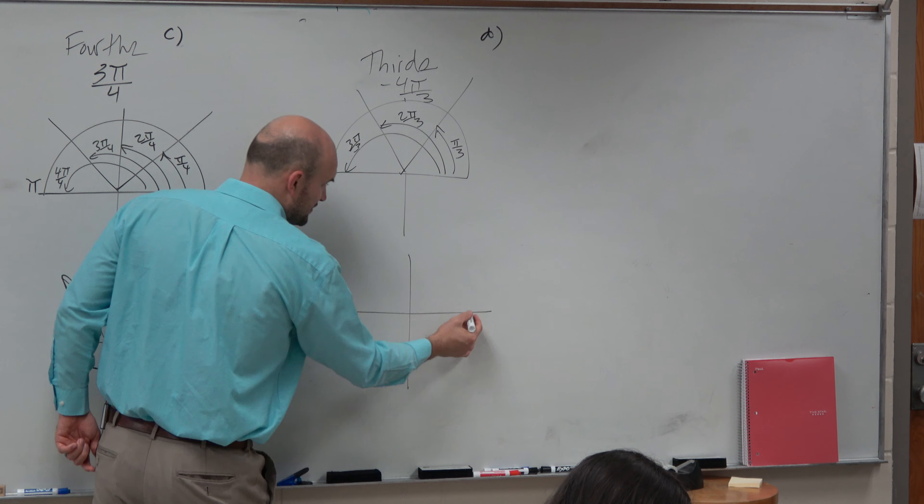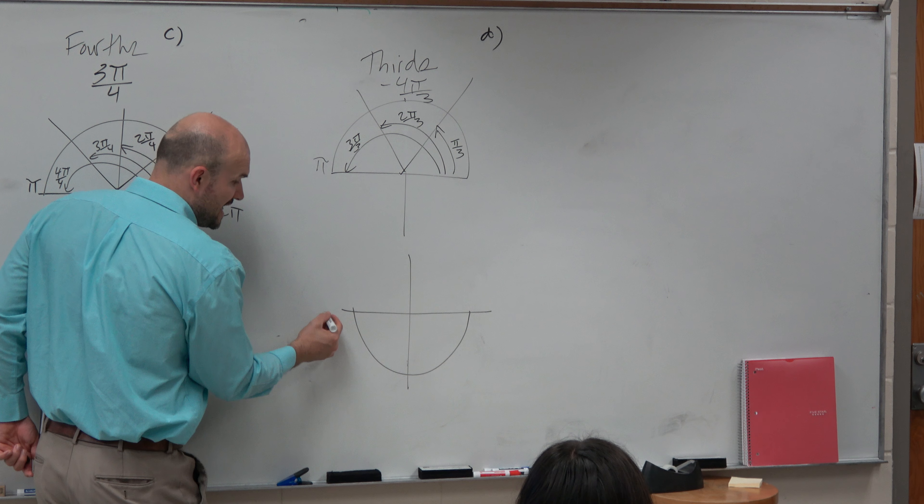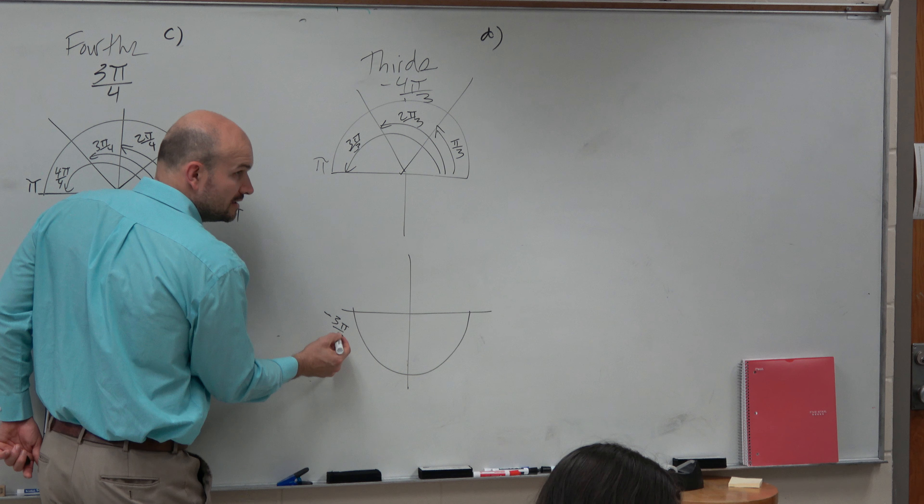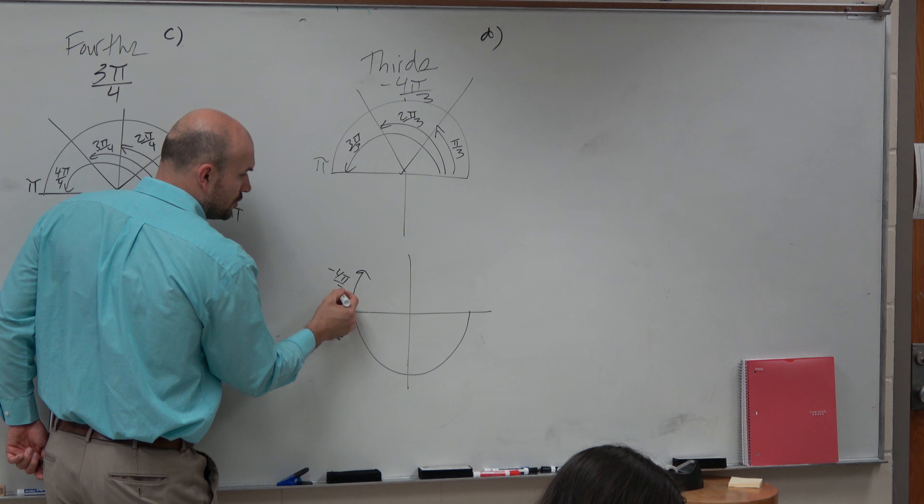But it's supposed to be in the negative direction. So again, negative 3π over 3 is like this. Would you guys agree? That is negative 3π over 3. So to go one more π over 3 over would be negative 4π over 3.